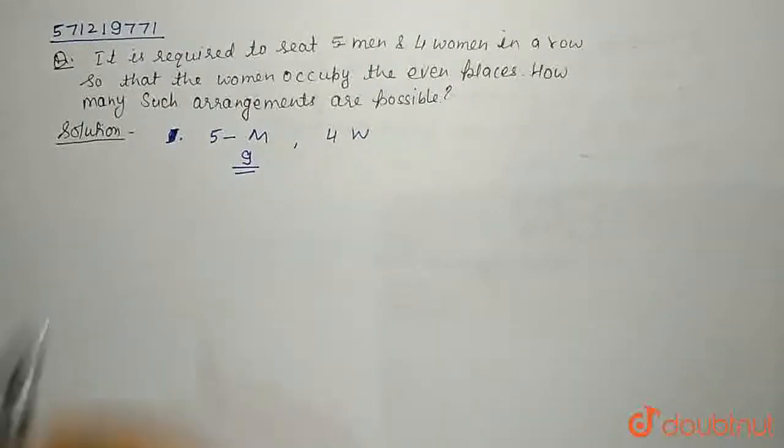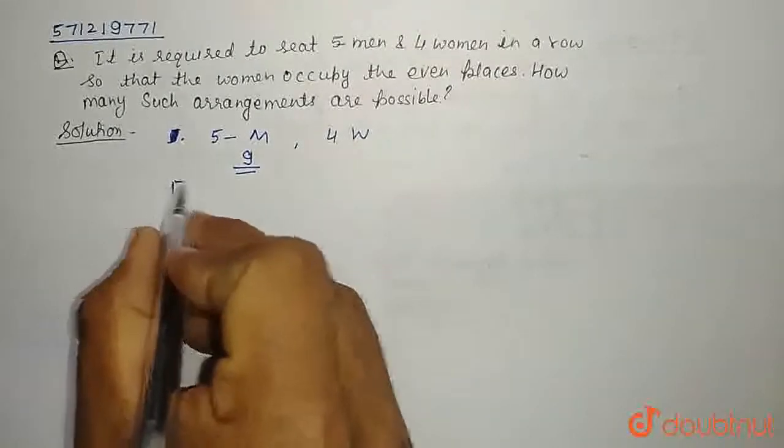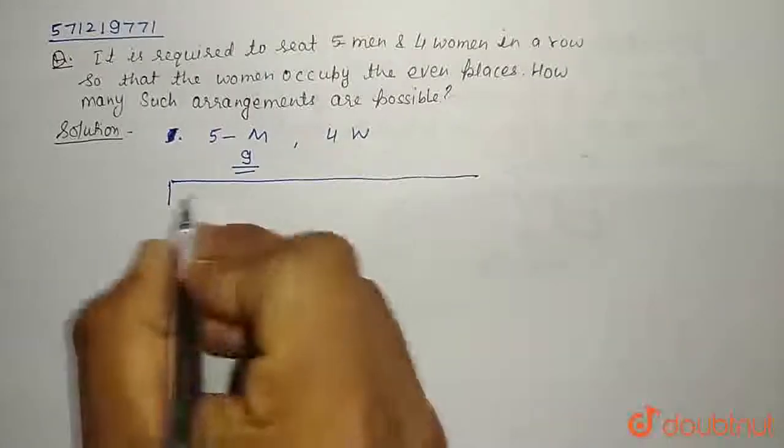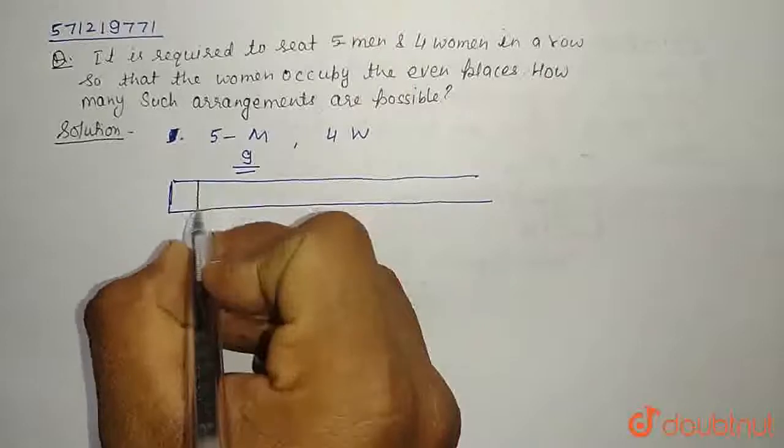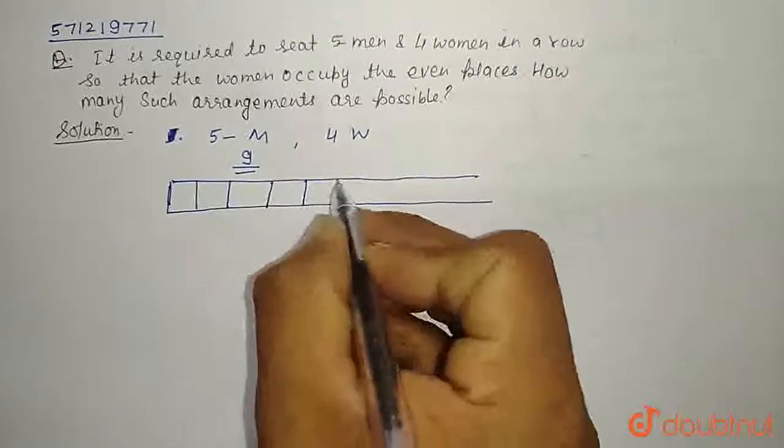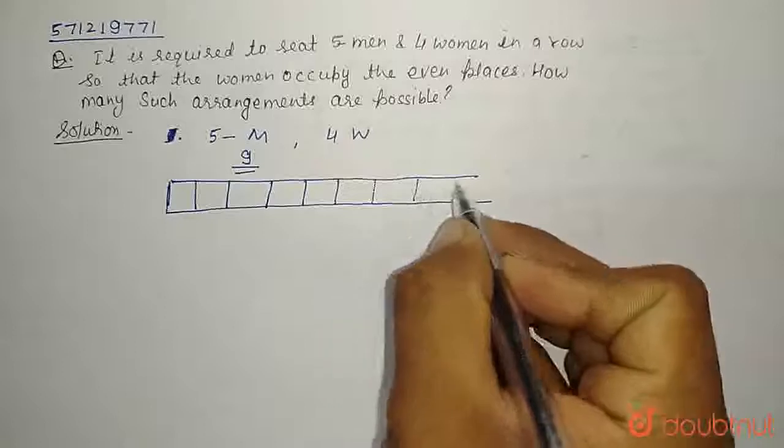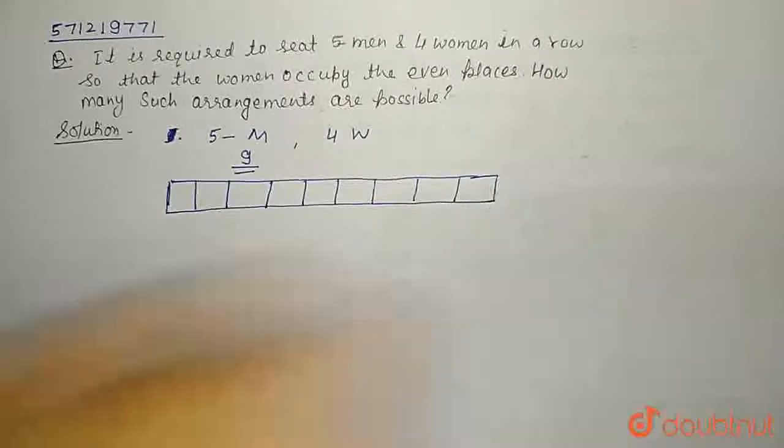Now we need to arrange them in a row. So we have total 9 positions in a row in which we need to arrange them. 1st position, 2nd, 3rd, 4th, 5th, 6th, 7th, 8th and 9th.